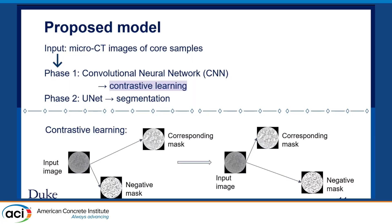How does contrastive learning work? We have the input image and all labeled masks. We randomly select two masks: one is considered a negative mask, and the other is the specific corresponding mask to the input image. We run them through the contrastive learning model, which learns the similarity between the input image and its corresponding mask, gives more information on where the pores should be, and captures the difference between the corresponding and negative masks — all of which is then fed into the U-Net model.